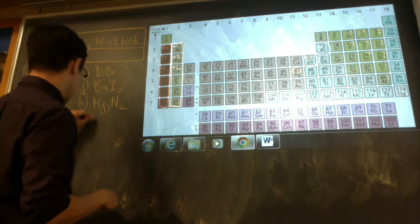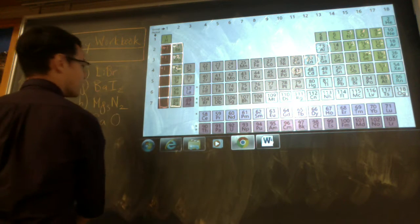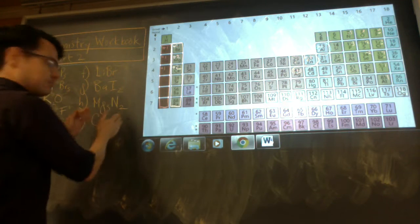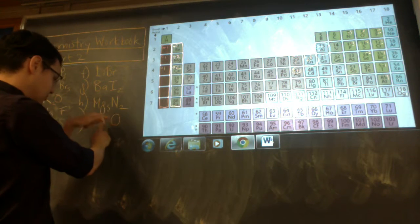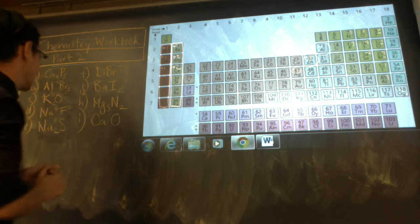Calcium oxide. Calcium 2, oxygen 2, that's 2 and 2. They're going to balance out. 2, 2 becomes 1 and 1, so just CaO.